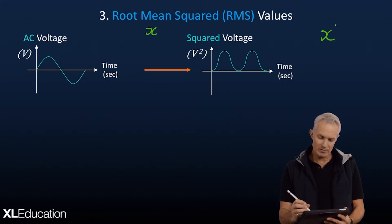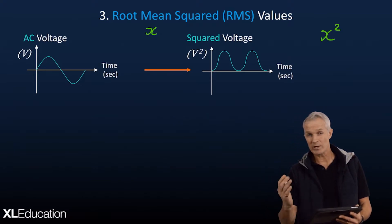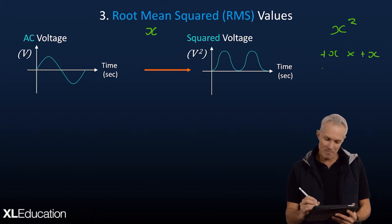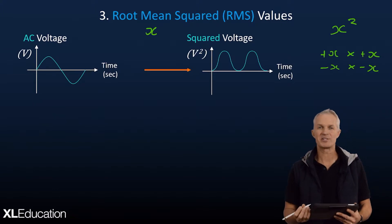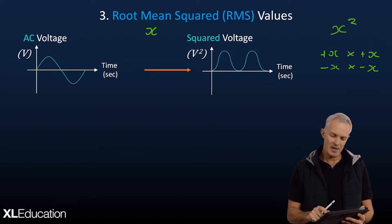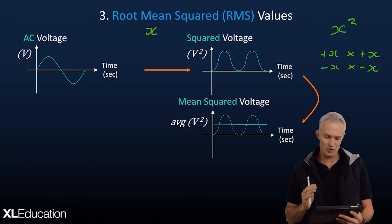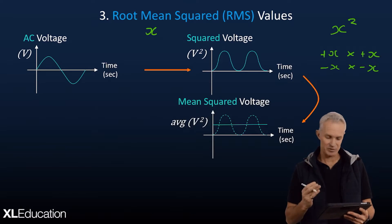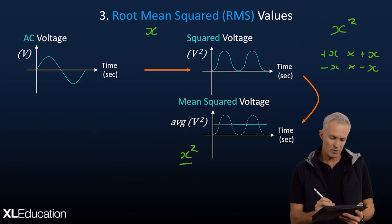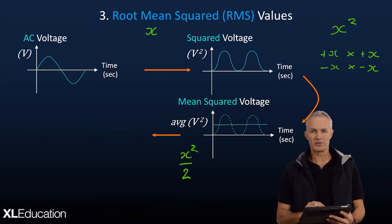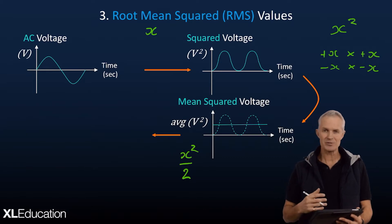The first step is to square it. The second step is to take the mean of the new positive squared values — the average of those. That gives us x squared over 2 as our average. But that's not a real value for the voltage because it's still in the squared state, so we need to unsquare it. The opposite of squaring is to take the square root. So we take that whole expression and square root it — giving us the square root of x squared over 2, which simplifies to x over root 2.